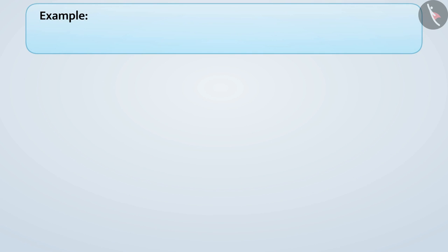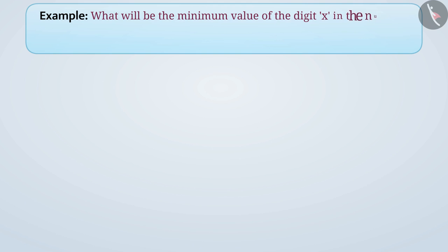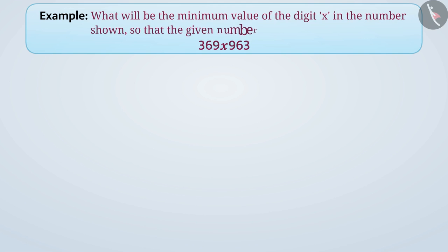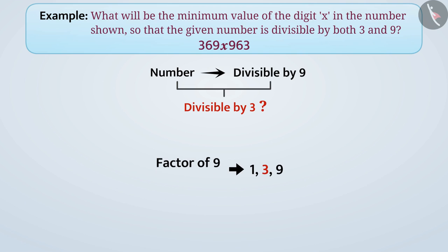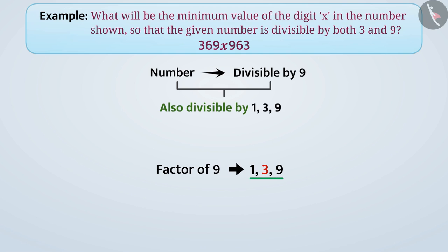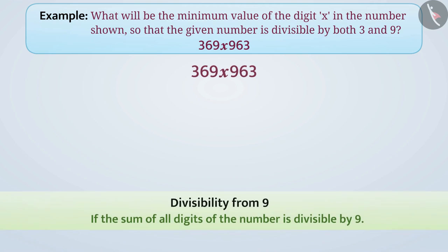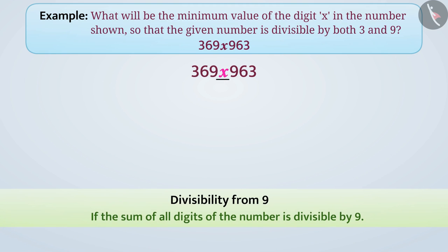Next example. What will be the minimum value of x in the number shown so that the given number is divisible by both 3 and 9? Just before solving this question, think: will a number divisible by 9 also be divisible by 3? Pause the video and consider it. Since 3 is a factor of 9, if a number is divisible by 9, it means that number is divisible by the factors of 9. With this understanding, we can find the value of x by using the law of divisibility by 9.